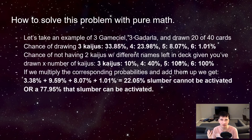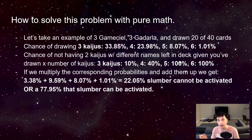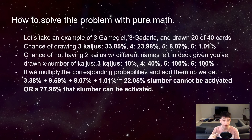What are the chances of the first three Kaijus you draw all being Kadarla? Or with four Kaijus, if you do three and one, that doesn't work — if you have three of one Kaiju and one of the other, the last two Kaijus remaining will be the same name.